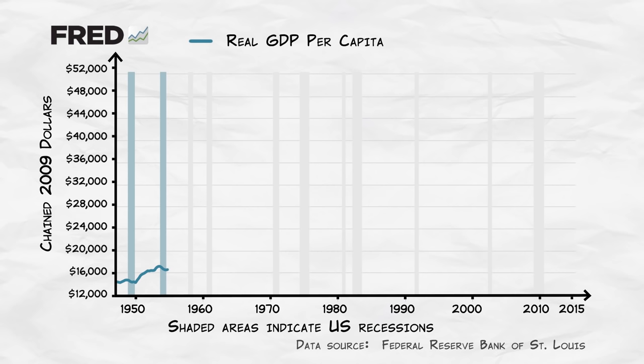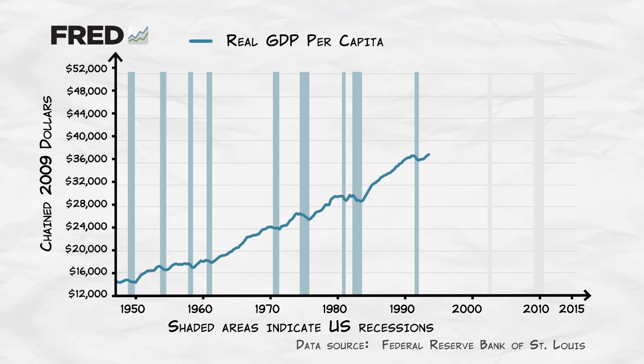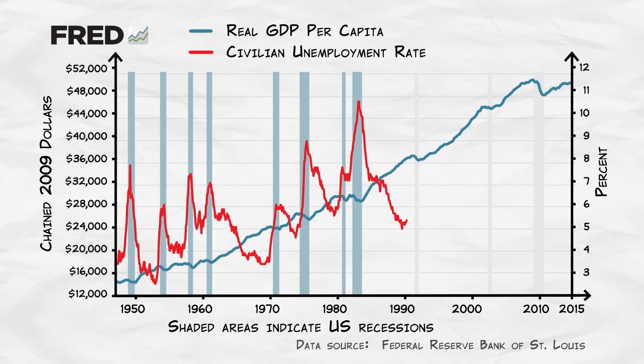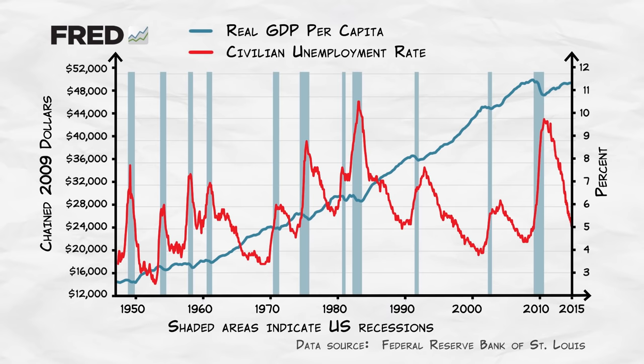Now let's take a closer look at this graph. We can see another reason why we're interested in the GDP statistic: real GDP per capita declines during recessions. In fact, a decline in real GDP is part of what defines a recession. Declines in real GDP also tend to be accompanied by increases in unemployment — you can see that when real GDP dips, the unemployment rate spikes.